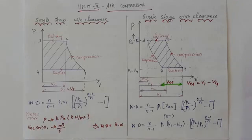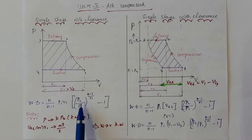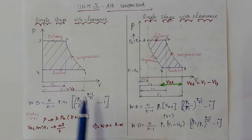With the clearance formula: one formula is [n / (n-1)] × P1V1 × [(P2/P1)^((n-1)/n) - 1]. This is the formula for without clearance.